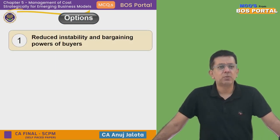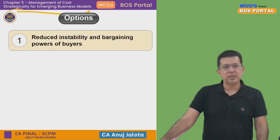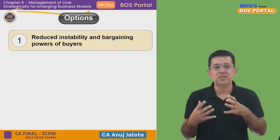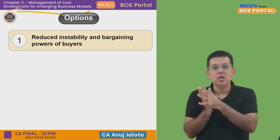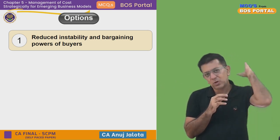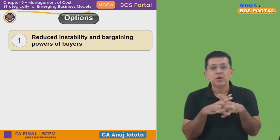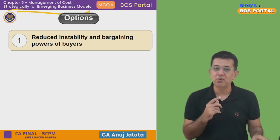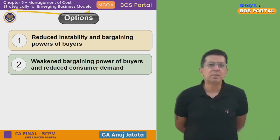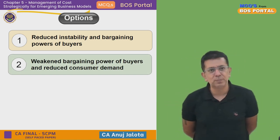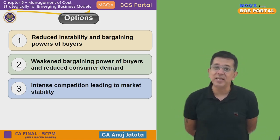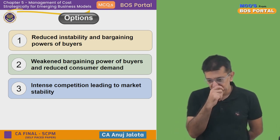Whenever there is hyper competition, option one says 'reduced instability and bargaining power of buyers' — that is wrong. At that time, the bargaining power of buyers will increase because there are a lot of options, as per Porter's Five Forces model from chapter one. Due to competition, bargaining power of buyers always increases. So option one is wrong, and option two says 'weakened bargaining power of buyers' — also wrong.